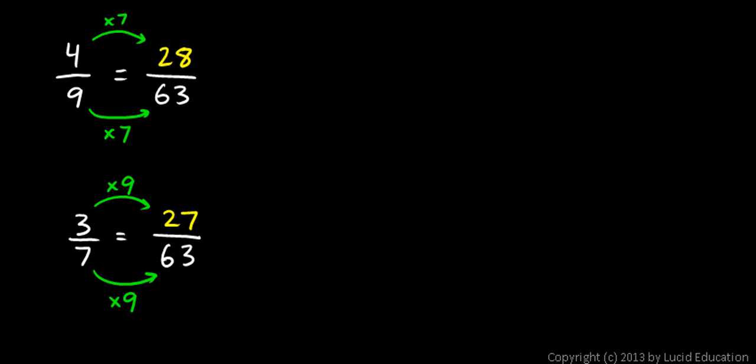And 3 sevenths is in fact equal to 27 sixty-thirds. So I've just multiplied the numerator and the denominator by the same number. In this case 9. And I get an equivalent fraction.